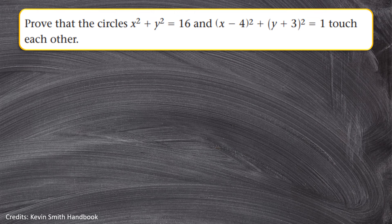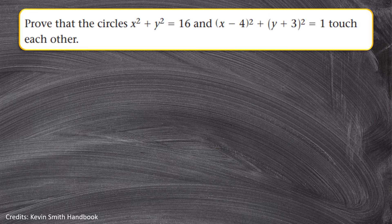Let's do one example. Prove that the circles x² + y² = 16 and (x − 4)² + (y + 3)² = 1 touch each other. They want you to prove that these two circles intersect each other. They didn't specify whether at one point or two points, so you just need to prove they touch. What you do is calculate the distance between their centers, so you need the coordinates of each circle's center.